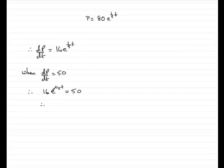So, all we need to do is divide both sides by 16 and get e to the one-fifth t equals 50 divided by 16. Now, 50 divided by 16 is going to give us 3.125 if you do it on your calculator.